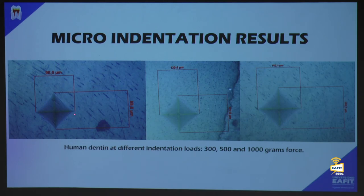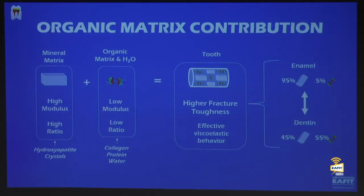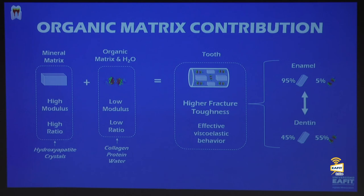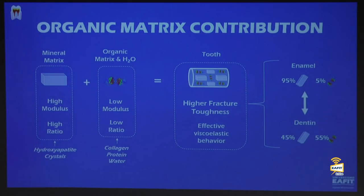To explain the organic matrix contribution: both enamel and dentine are composed of a mineral phase and an organic phase. The mineral is hydroxyapatite in mammals and reptiles, and fluorapatite in fish. The organic phase consists of proteins and water. These two elements joined in different ratios give us enamel (95% mineral, 5% organic) and dentine (45% mineral, 55% organic), making enamel six to ten times harder than dentine.